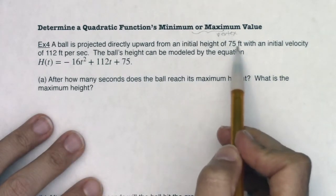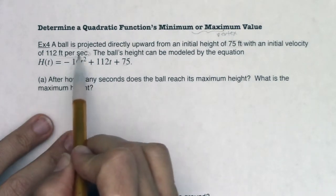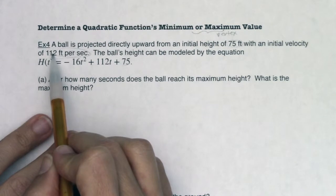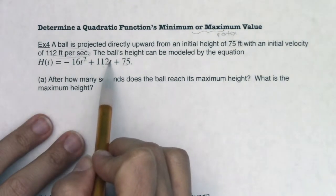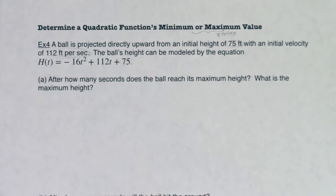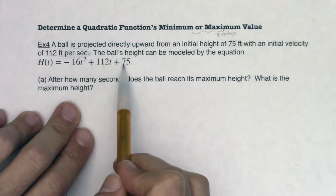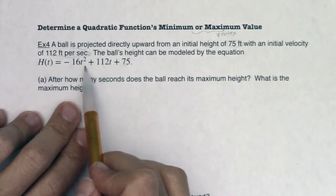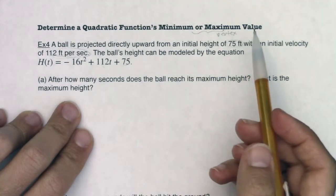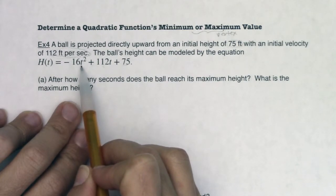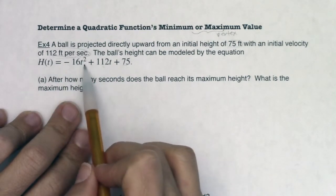Notice a couple of things: the initial height of 75 feet shows up in the y-intercept. The initial velocity of 112 feet per second shows up in the linear term. This is the quadratic term, this is the linear term, this is the constant. That's true for all projectile formulas — you have negative 16t squared when dealing with feet. This will always be your initial velocity and this will always be your initial height. The velocity was positive because we were throwing the ball upward, and the initial height was positive because the building was above ground.